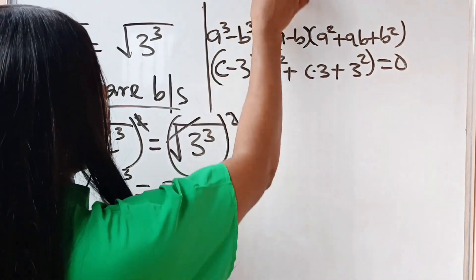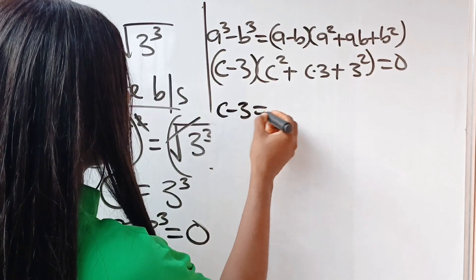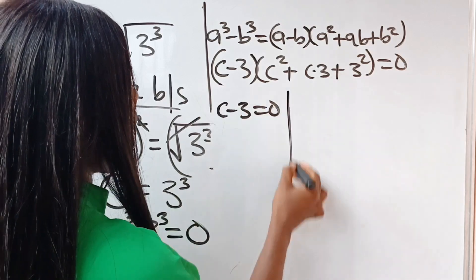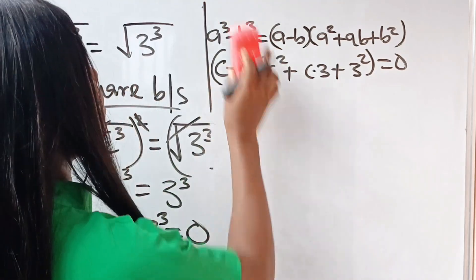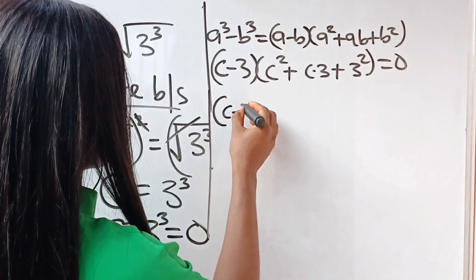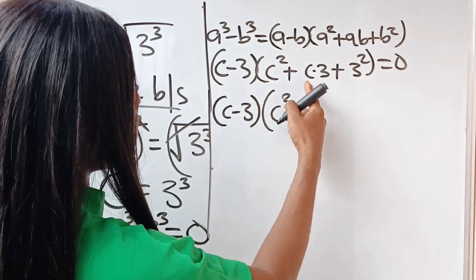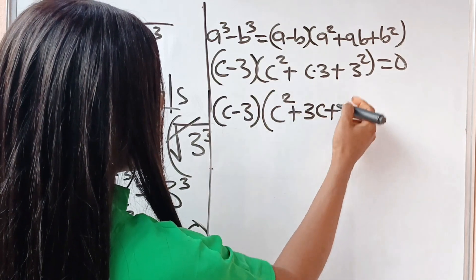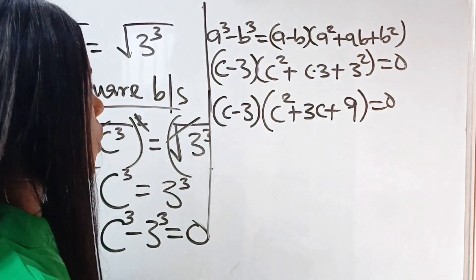So this is what we have here. Remember that from this, we have that c minus 3 is equal to 0, right? And for this side, let's try to expand this further. So we have c minus 3 multiplied by c squared plus 3 times c is 3c plus 3 squared is 9. Is equal to 0.